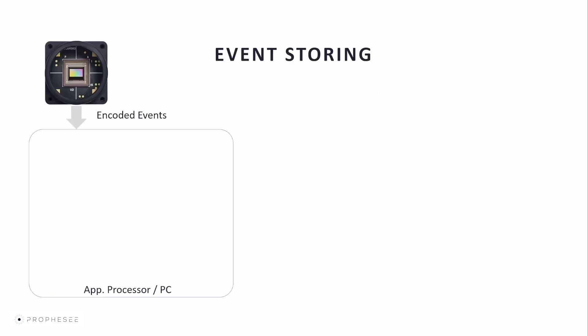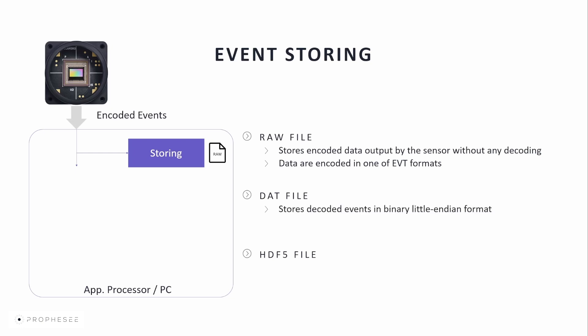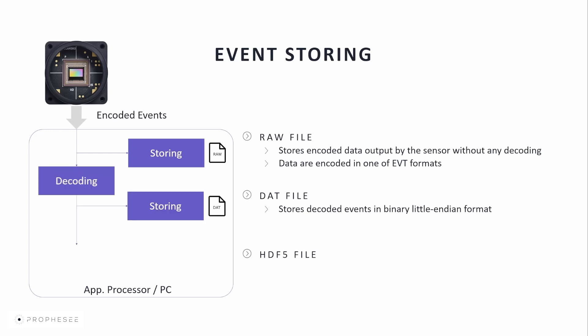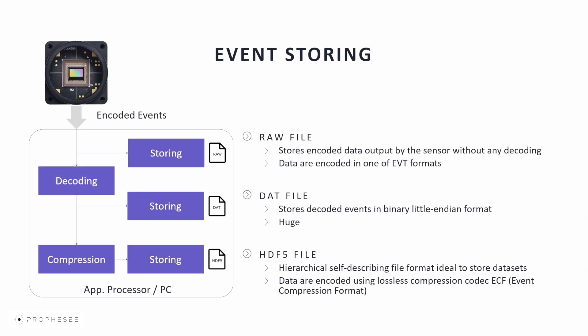Event data can be stored in three main file formats: RAW, DAT, and HDF5. RAW files can be used to store directly encoded data output by the sensor without any decoding — in this case the data is stored in one of the EVT encoding formats. Alternatively, you can store decoded data in a DAT file that stores events in a binary little-endian format. Note that the same data saved in a DAT file takes more space on disk, so we advise using the other formats; DAT is mainly kept for compatibility with older recordings. It's also possible to store decoded data in an HDF5 file, a standard hierarchical self-describing file format ideal for storing datasets. Data are encoded using lossless compression codec ECF, or the event compression format.